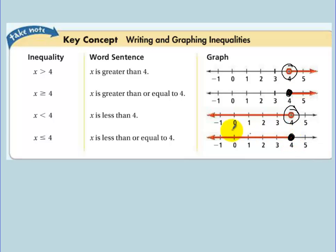When you have the 'or equal to' parts — greater than or equal to, or less than or equal to — you do a closed circle. This is a closed circle at four. So if you have the 'or equal to,' you put a black dot there because four is a valid answer, and everything bigger or less than that.